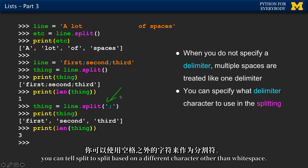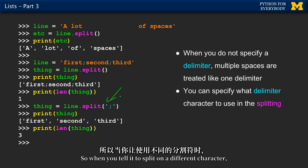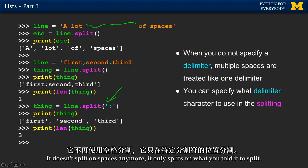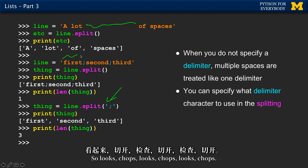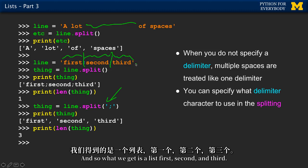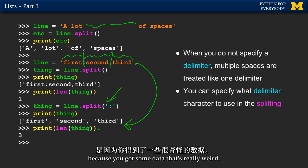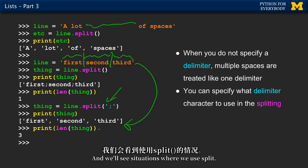You can tell split to split based on a different character other than white space. When you tell it to split on a different character, it doesn't do the fancy compression of multiple spaces - it only splits on what you told it to split. So it looks, chops, looks, chops, looks, chops - and what we get is a list with first, second, and third. This is useful when you've got data that's really weird.